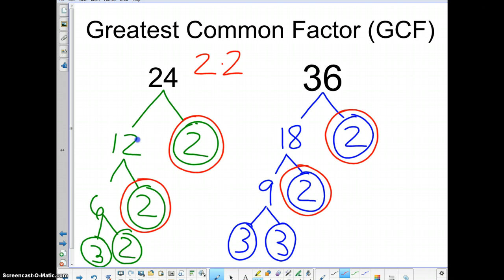Now 24 has one more 2 but 36 does not. Okay. So we can't have this 2 and we can't have one of those 3's. But we can have another one. There is one 3 to give over on the 24 and there's another 3 here. And so that means we do a 3 up there.